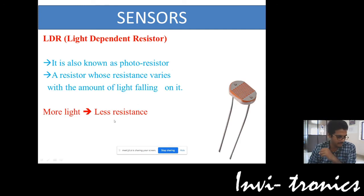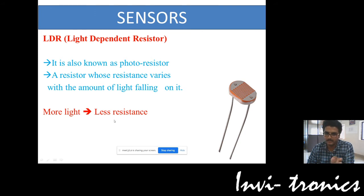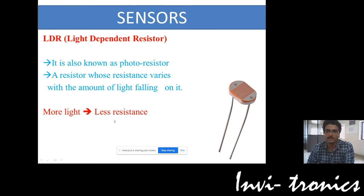Light means less resistance for an LDR. If you put more light on an LDR, it is going to show least resistance. Less light means more resistance. You can use LDRs for simple projects like automatic street light turning on and off.